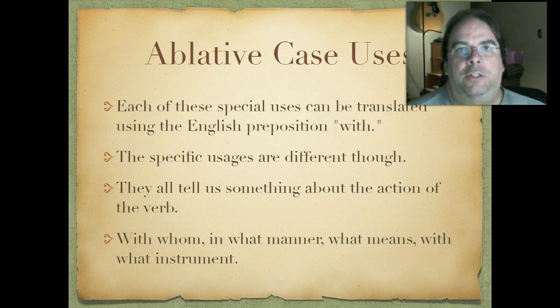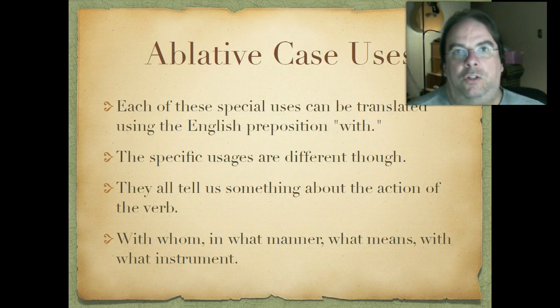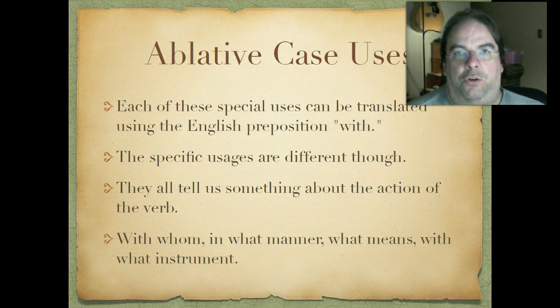Each of these special uses can be translated using the English preposition with, either with or without a Latin preposition. They all tell us something about the action of the verb — answering questions like with whom, in what manner, by what means, with what instrument — helping describe what's going on a little better.